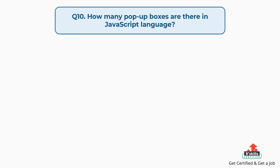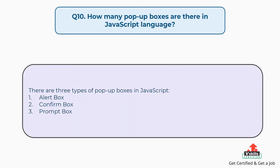Question number ten: how many pop-up boxes are there in JavaScript? There are three types of pop-up boxes in JavaScript: alert box, confirm box, and prompt box.